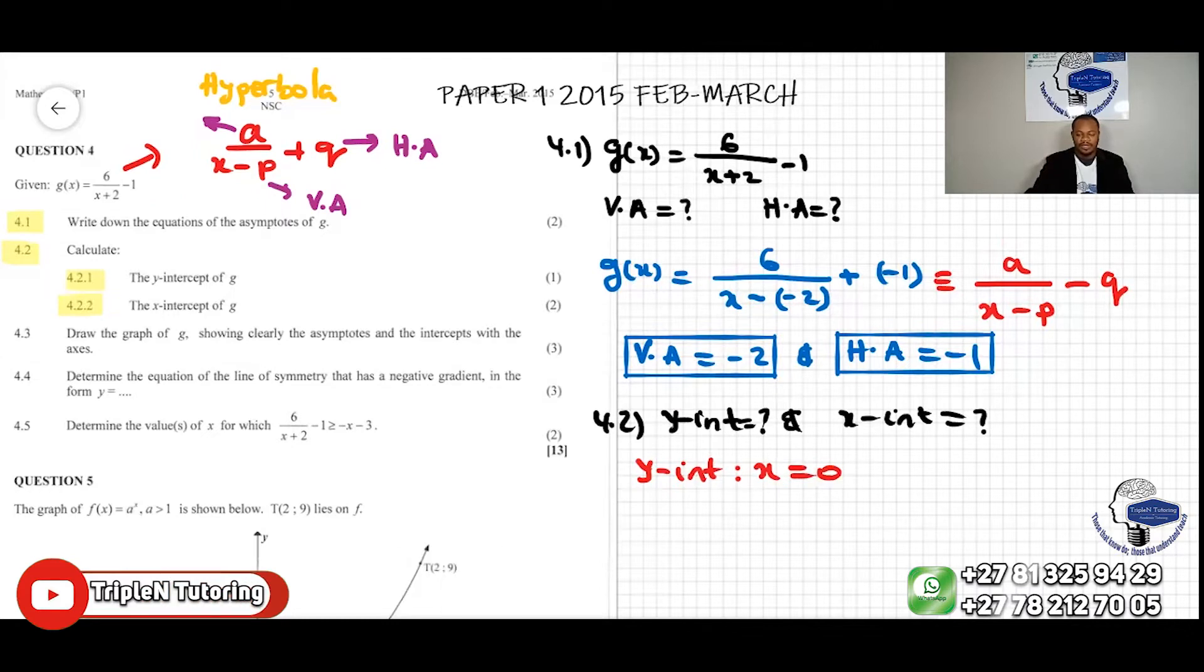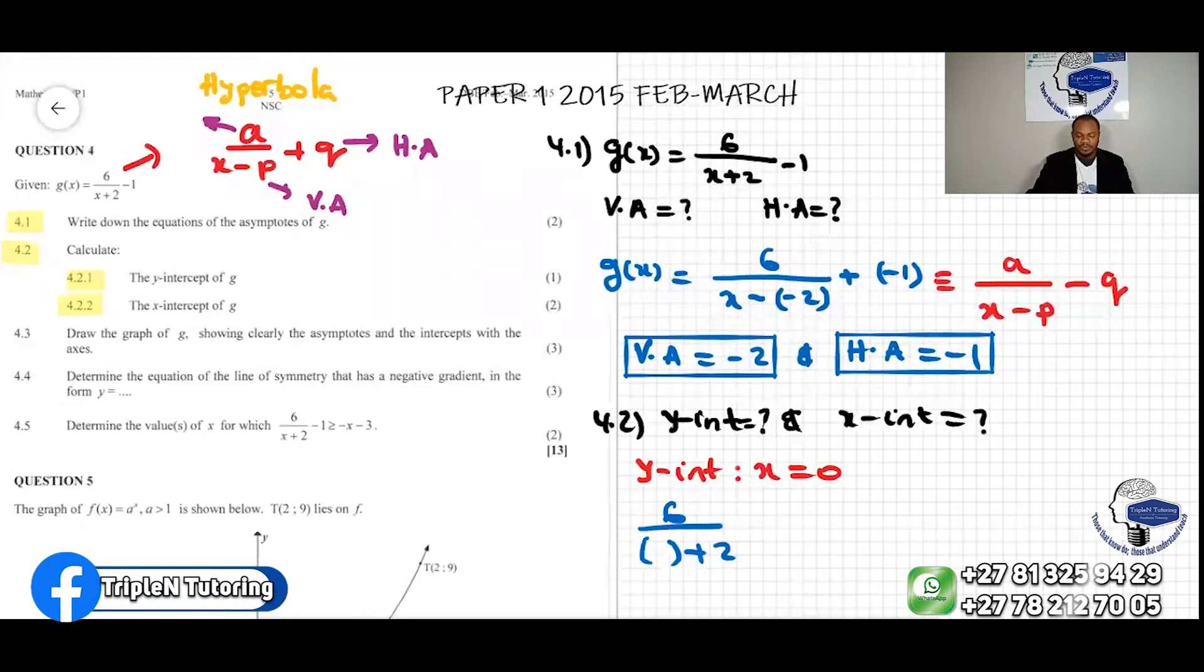So this will be, we're going to say 6 over x plus 2 minus 1.